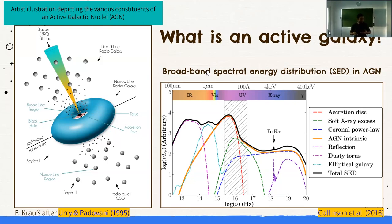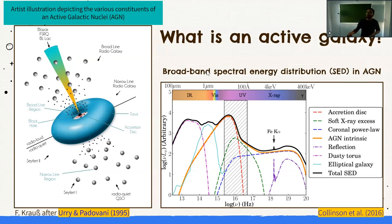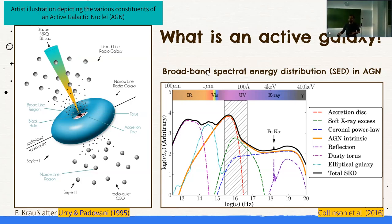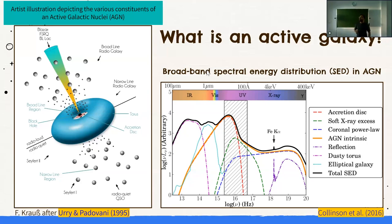AGN have a variety of classifications, mostly historical and phenomenological, depending on the line of sight. Further out, there is an obscuring torus — in older diagrams depicted as a smooth dusty distribution — which reprocesses ionizing radiation into the infrared. With an unobstructed view we see the central continuum source; viewed more edge-on, the torus blocks everything inside it. AGN also have a multi-wavelength spectral energy distribution spanning from X-rays to infrared.